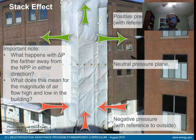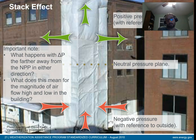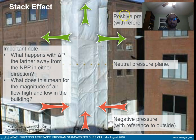The further you get from the neutral pressure plane, the greater the magnitude of the positive pressure up high and the more negative it is down low. Air leaks at the neutral pressure plane will be minor — there's not a big delta P between inside and outside at that point. Up high and down low is where you really get a lot of leakage because of the stack effect.